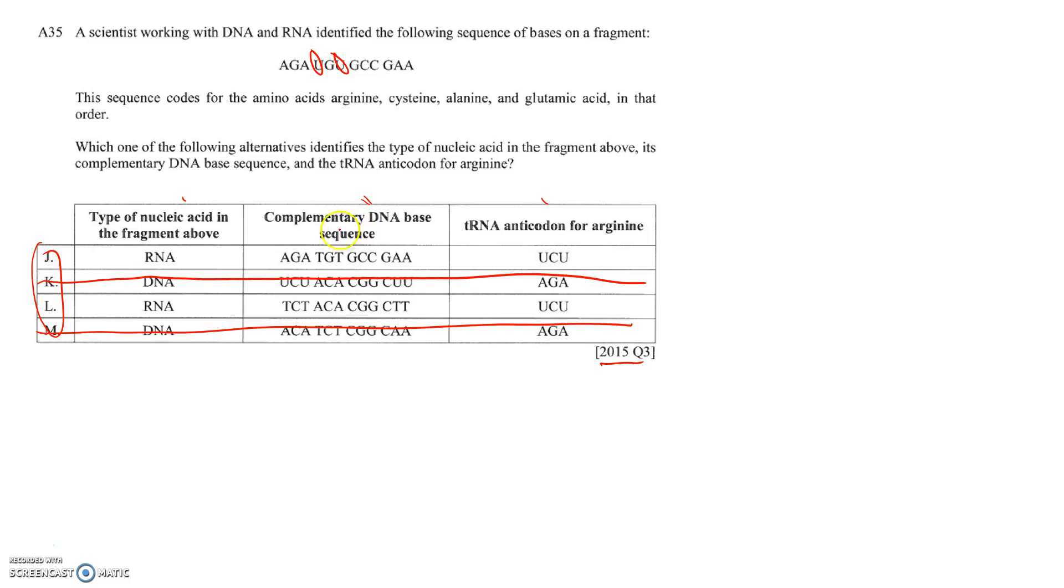The next one is saying complementary DNA base sequence. If I write this out: A, G, A, U, G, U, G, C, C, and G, A, A, that's going to be the RNA. I can try and work out what the DNA is up here.